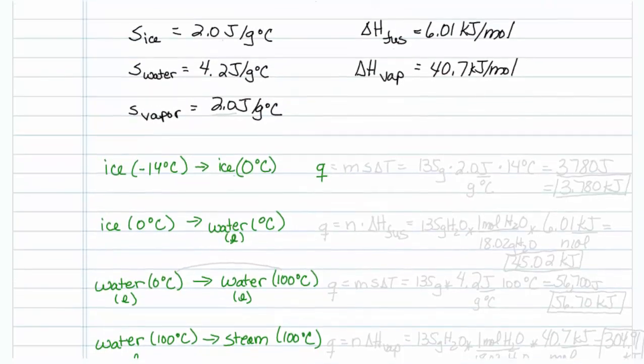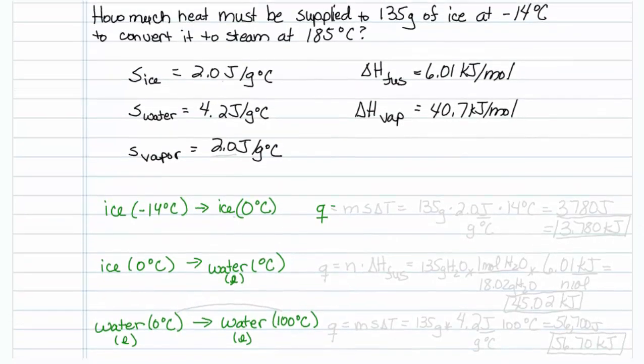We'll start with ice. Changing the temperature of ice is going to be equal to ms delta t. Our mass of material is 135 grams. The specific heat of ice is 2.0 joules per gram degrees Celsius. And going from minus 14 to 0 gives us a delta t of 14 degrees Celsius. So I will multiply that out. My answer comes out to be 3,780 joules for that answer.